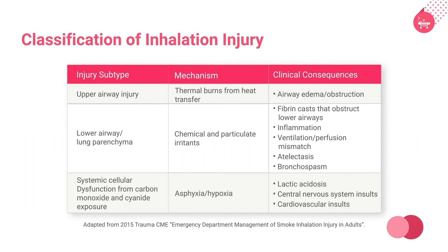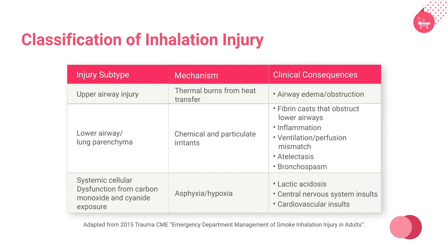In upper airway injuries, damage to the tissues occurs due to transfer of heat from thermal burns, which causes airway obstruction and edema. In lower airway or lung parenchyma injuries, chemical and particulate irritants cause the formation of fibrin casts that obstruct the airways; the irritants elicit an inflammatory response and cause ventilation-perfusion mismatch, atelectasis, and bronchospasm. In systemic cellular dysfunction from exposure to carbon monoxide and cyanide gases, asphyxia or hypoxia leads to lactic acidosis and injuries to the central nervous system and cardiovascular system.